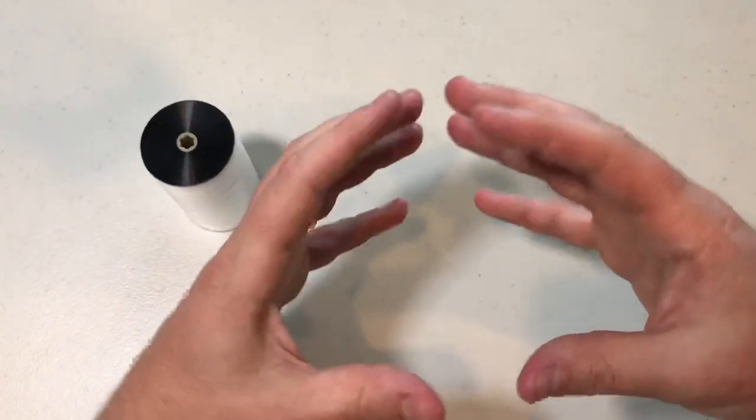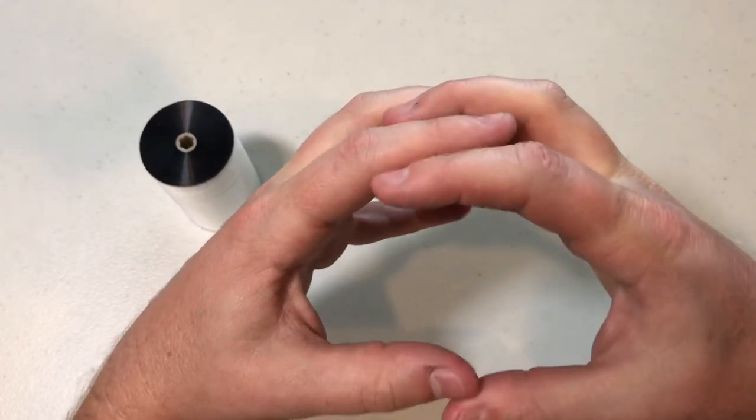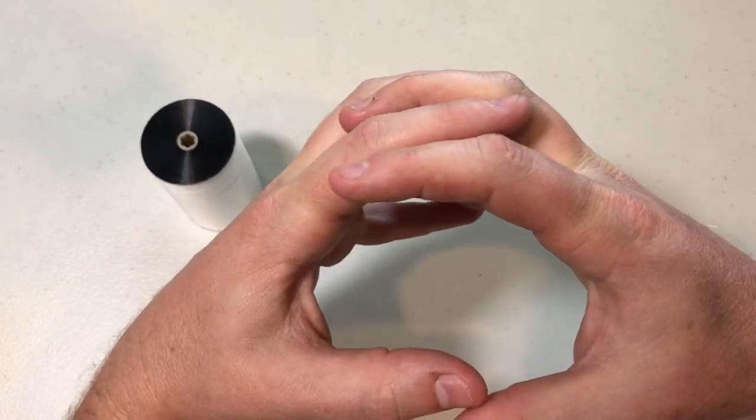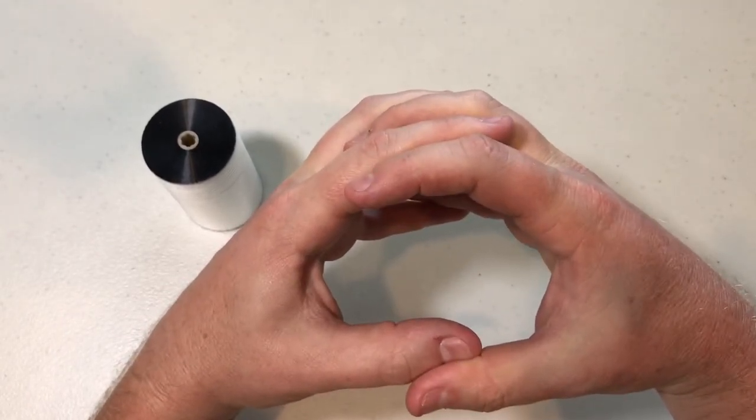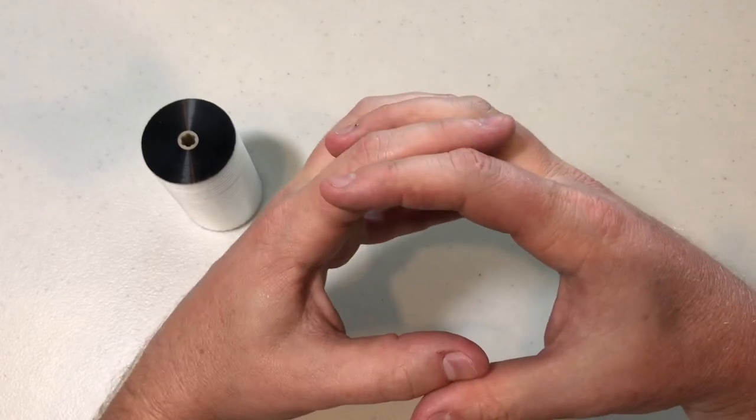And so if you imagine my hands are the scroll plates in a compressor, the top plate is fixed, and then the bottom part oscillates a little bit, so it kind of does this. And so the forces that force them together side-to-side, those would be the radial forces. And the forces that force them together top-to-bottom, those would be the axial forces.